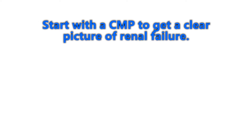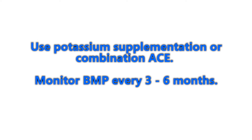At higher doses of hydrochlorothiazide — 25 to 50 milligrams — consider starting a potassium supplement of 10 to 20 mEq of potassium chloride daily, and monitor their basic metabolic panel every three to six months. Alternatively, for stage three hypertension, starting an ACE inhibitor alongside hydrochlorothiazide reduces the need for potassium supplementation, though you should still monitor kidney function and potassium levels.